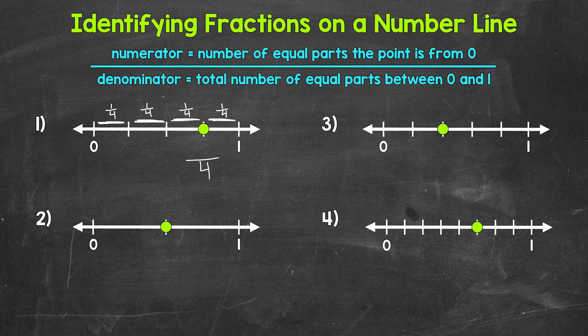Now we need to figure out our numerator — that's going to be the number of equal parts the point is from zero. Going from zero, we are one, two, three equal parts away from zero. So three is our numerator. Our fraction is three fourths. Looking at the number line, this makes sense: one whole is divided into four total equal parts, and the point is three out of the four total parts away from zero.